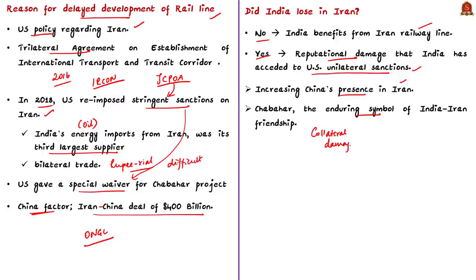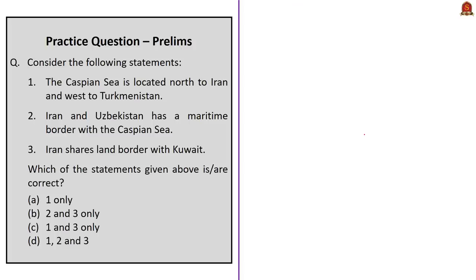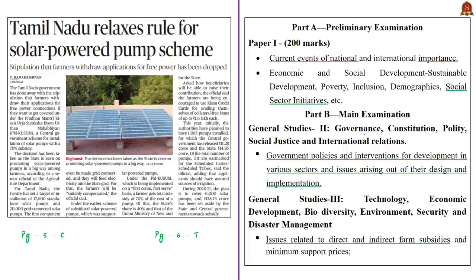This is all about this news article. The next news article says: Tamil Nadu government relaxes rules for the solar power pump scheme. In this context, know that India has made significant commitments in its Nationally Determined Contributions as per the United Nations Framework Convention on Climate Change. One of India's commitments is to increase the share of installed electric power capacity from non-fossil fuel sources to 40% by the year 2030.